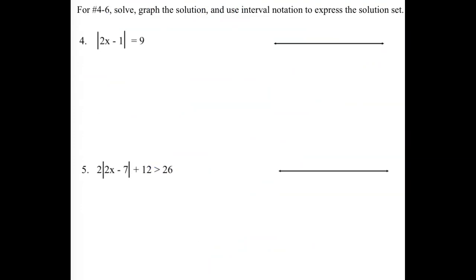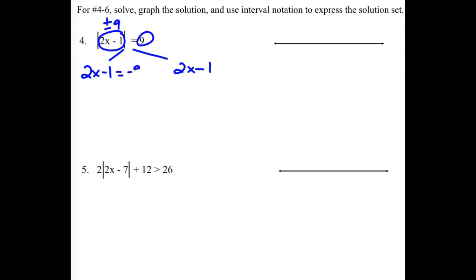For the next set of questions, we are looking at absolute value equations and inequalities. We are going to solve, graph the solution, and use interval notation to express our solution set. Our first one is an equality — everything on the left side is inside the absolute value bars. So we can split it into two cases: 2x minus 1 could be a positive or a negative 9.